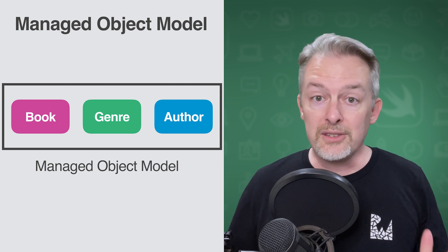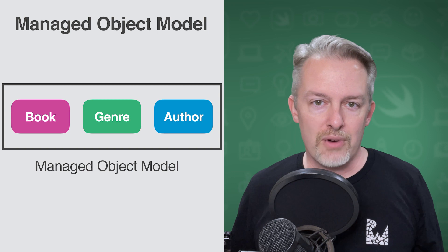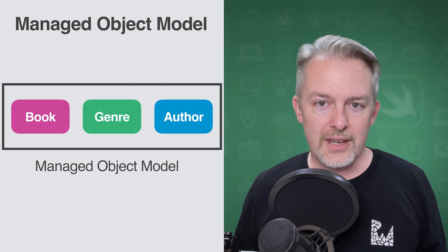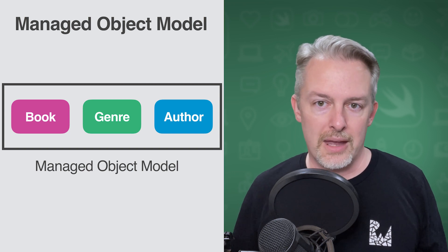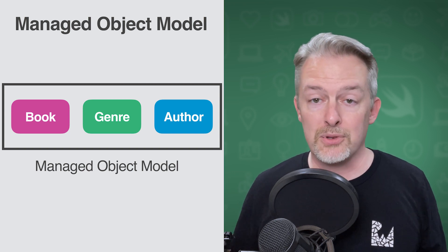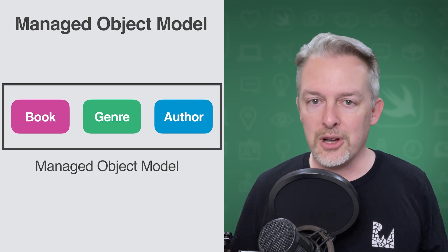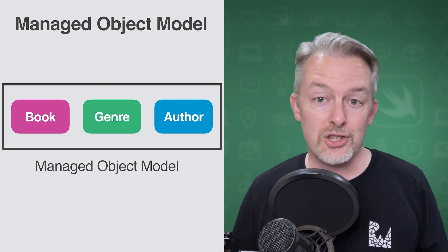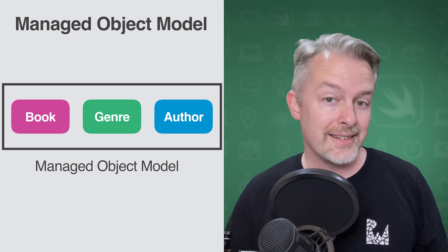So that's the first part of the stack — the object graph layer, represented here as the managed object model. In the next episode, let's talk about the managed object context.